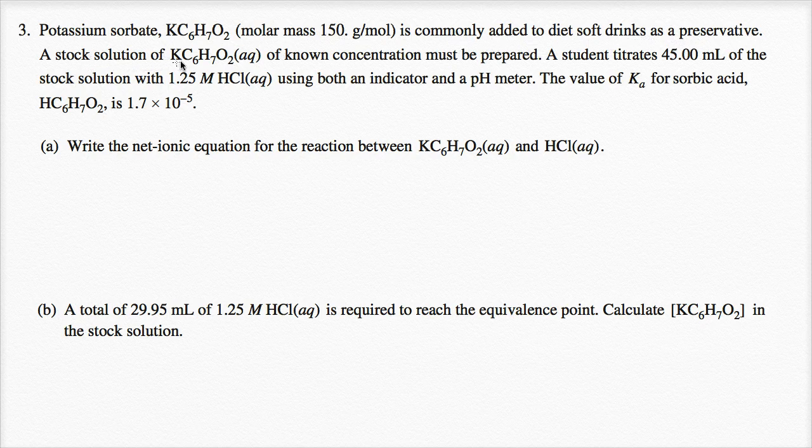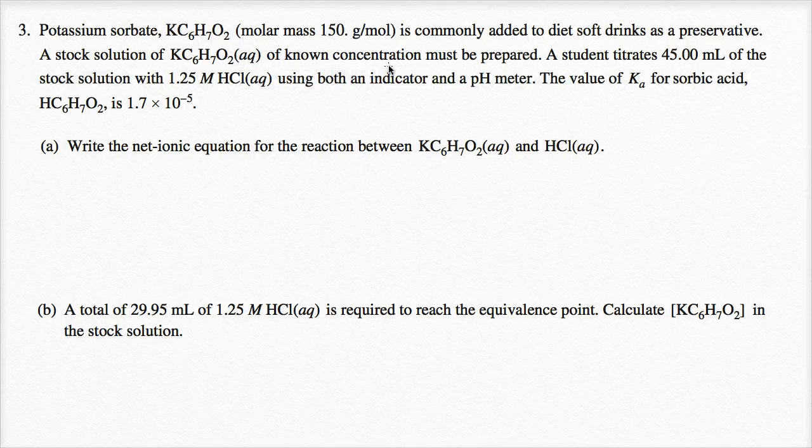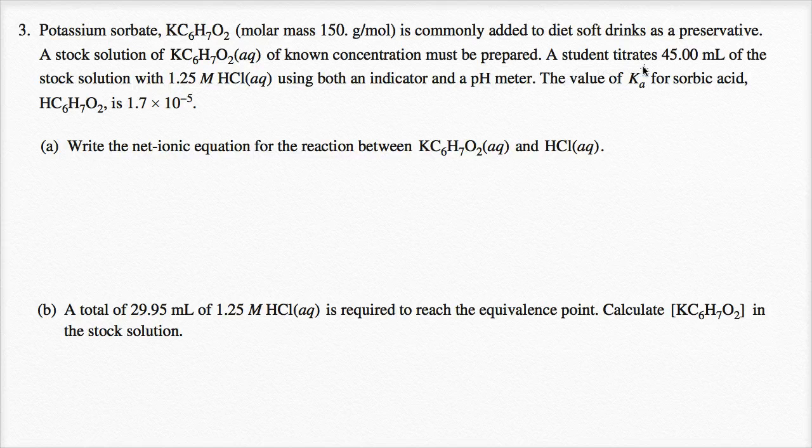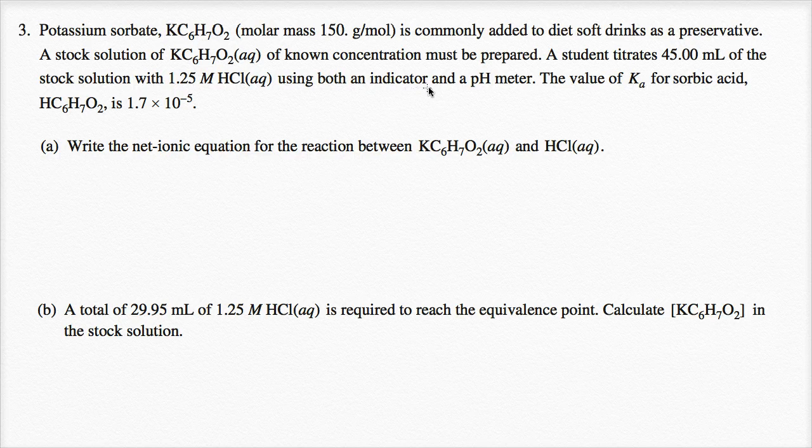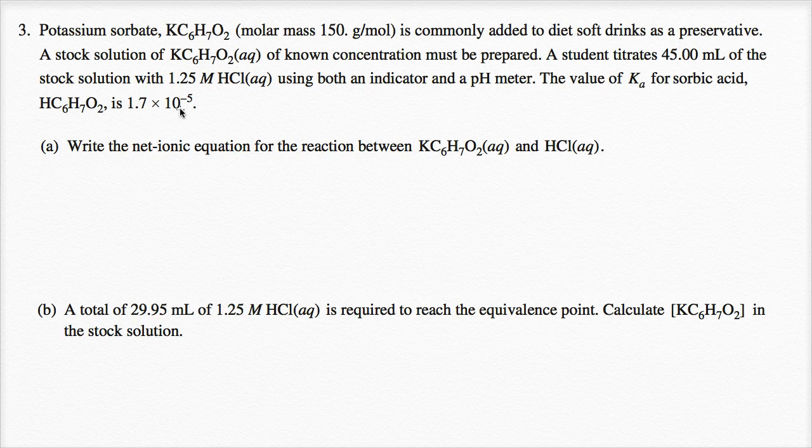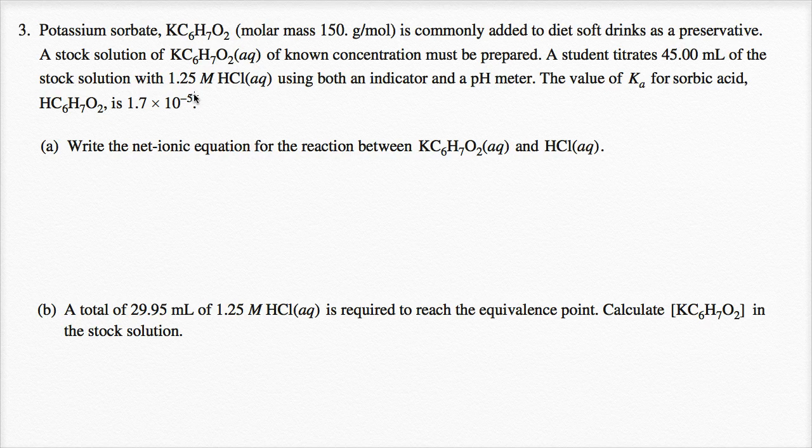A stock solution of potassium sorbate, dissolved in an aqueous solution here, of known concentration must be prepared. A student titrates 45 milliliters of the stock solution with 1.25 molar hydrochloric acid, using both an indicator and a pH meter. The value of Ka for sorbic acid is 1.7 times 10 to the negative fifth. All right, so let's tackle this piece by piece.